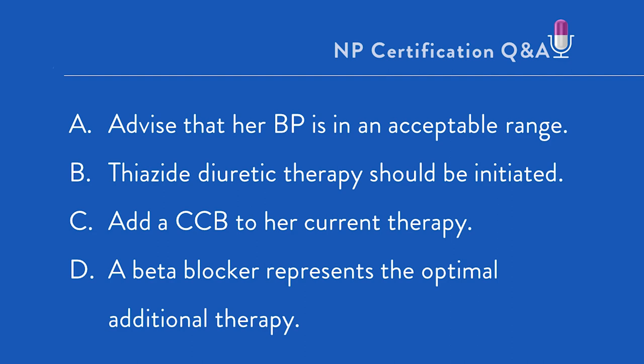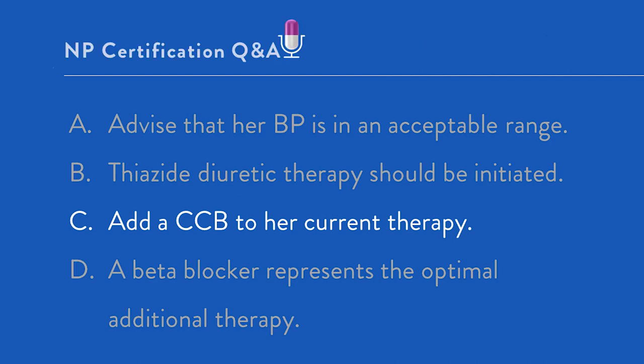Option C: add a calcium channel blocker to her current therapy. That is the best answer — the most reasonable choice. It's going to bring her blood pressure down nicely. It is mentioned favorably in both JNC8 and ACC-AHA guidelines as among the first medications we use for the treatment of high blood pressure, and is commonly an add-on medication in a situation like this.